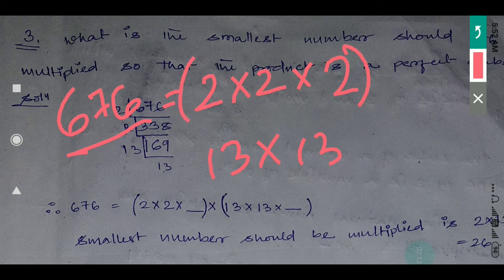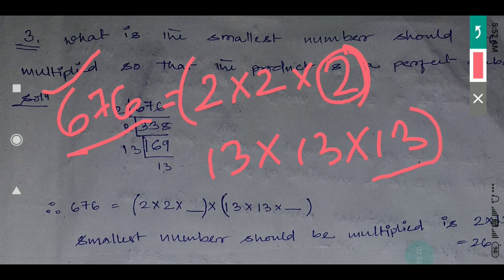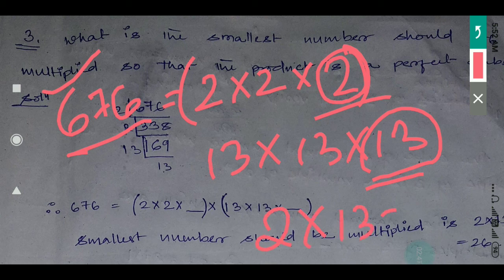For a perfect cube, instead of a pair form, we need a number multiplied three times. So here, one more 2 is needed and one more 13 is needed. So the smallest number you are multiplying is 2 and 13, that means 2 × 13 = 26. So 26 should be multiplied to 676 to make it a perfect cube.